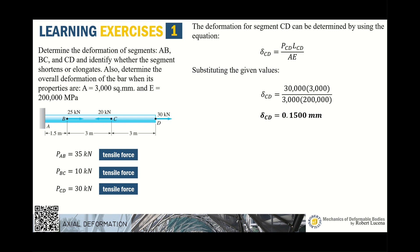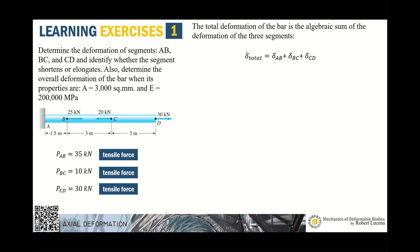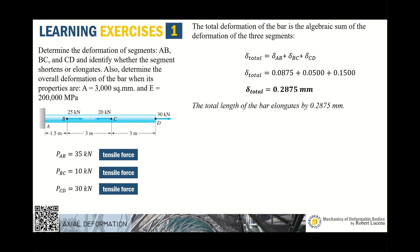The overall deformation is the algebraic sum of each segment's deformation: δ_total = δ_AB + δ_BC + δ_CD = 0.2875 mm, meaning the bar has elongated by 0.2875 mm. To find the strain, divide this total deformation by the original length of the member.